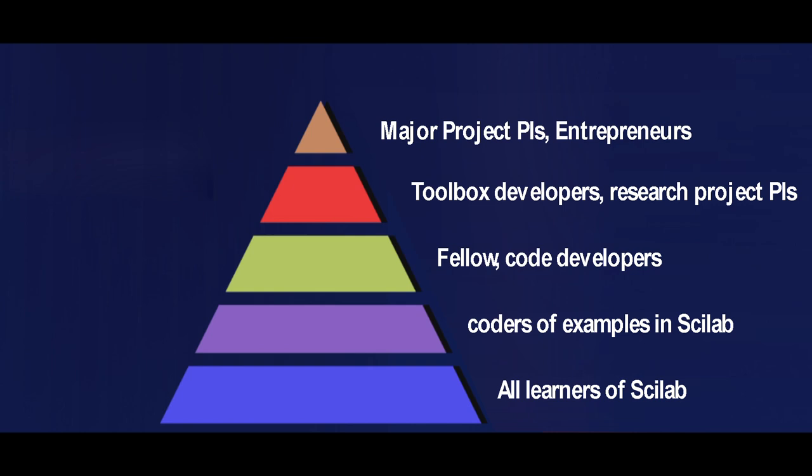Similarly, we constructed higher layers of the pyramid. Here is one such pyramid: we start from the bottom with all learners of Scilab, then some of them become coders, then there are people who got selected as fellows, some of them developed code, at the next level they developed toolboxes, some did research projects, and the final layer could be major projects or entrepreneurship. In a similar way, we constructed pyramids on different topics. As one moves up the pyramid, tasks become more difficult, but any motivated person can work hard and go up. Students at the top can be placed anywhere — even those at the second level could be placed. There are no limits on numbers at any level. So we call them attainable pyramids of excellence.